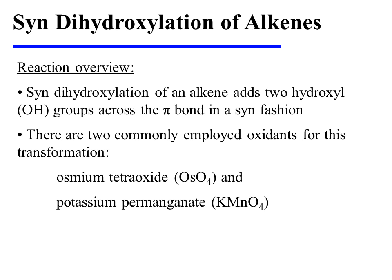The syn-dihydroxylation of an alkene adds two hydroxyl groups across the alkene pi bond in a syn fashion. There are two commonly employed oxidants for this transformation: osmium tetraoxide and potassium permanganate.